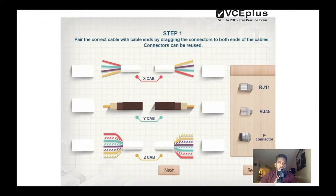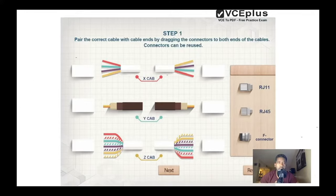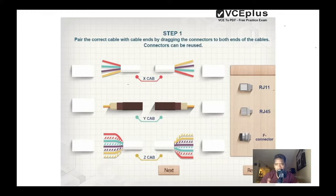In this simulation, pair the correct cable with the correct cable end by dragging the connectors to both ends of the cables. Connectors can be reused. The first cable has only two pairs of wires. On the right side you can see three types of connectors: RJ-11, RJ-45, and F-connector. RJ-11 is for phones and landlines, RJ-45 is for networking, and the F-connector is usually used for cable TV or some network systems.